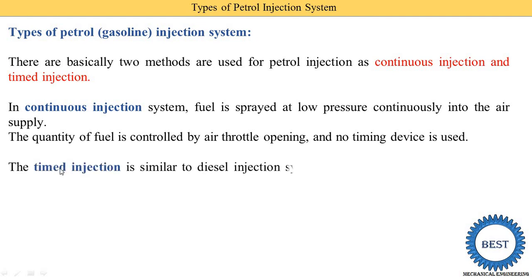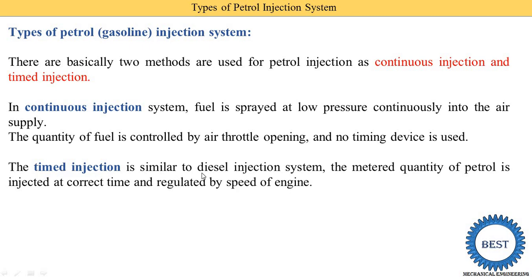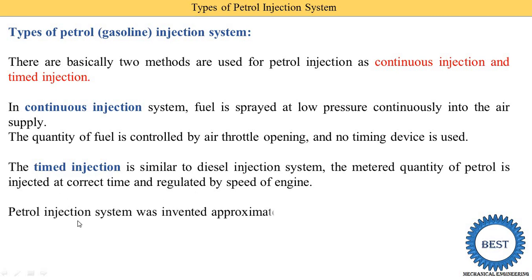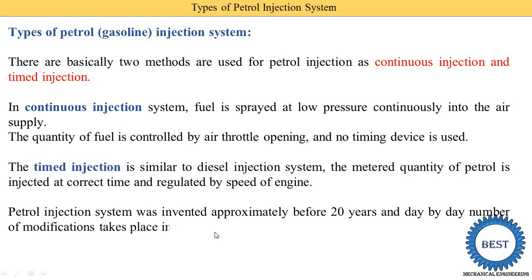Timed injection is similar to the diesel injection system. In diesel injection we know that diesel is sprayed at the end of the compression stroke at a particular time. Similarly, in the timed petrol injection category, petrol is injected at a particular time at the end of the compression stroke. A metered quantity of petrol is injected at the correct time and is regulated by the speed of the engine.